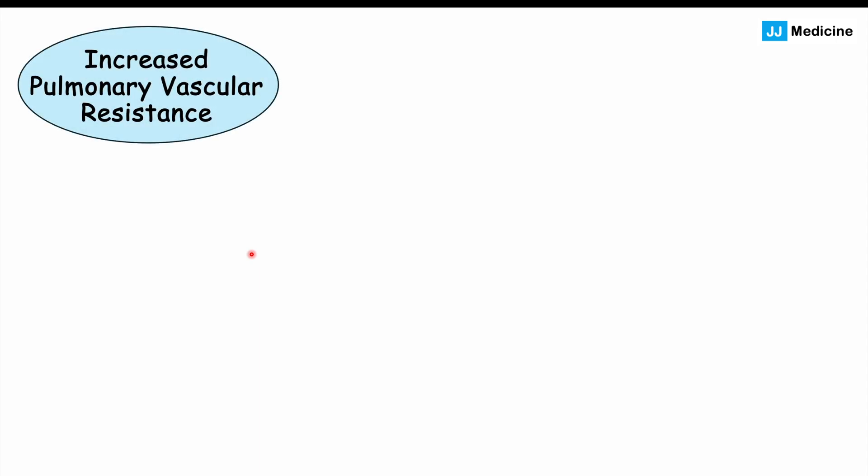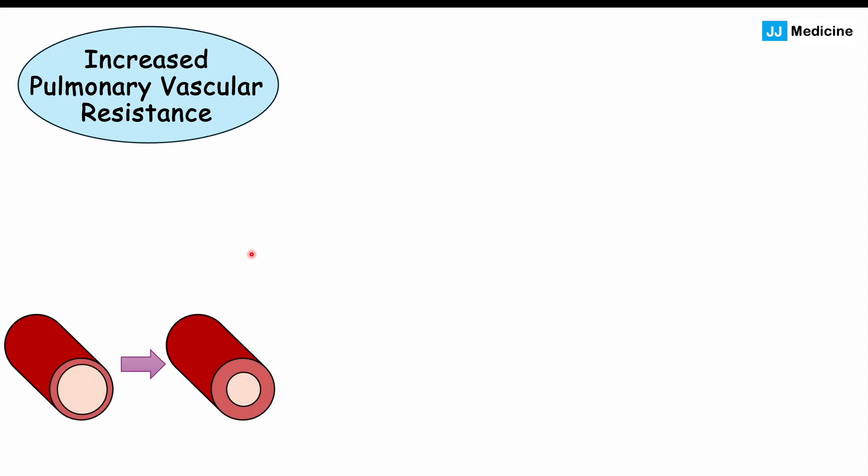More significant health consequences begin with increased pulmonary vascular resistance. Increased pulmonary vascular resistance involves the blood vessels in the pulmonary system — which carry blood into the lungs, allow oxygen to diffuse from the alveoli into the blood, and return that blood back to the heart — starting to experience increased resistance.